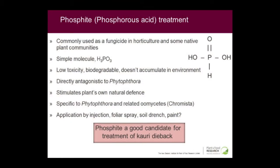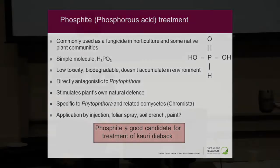Phosphite is a very simple molecule, H3PO3. It's been used in horticultural systems for a number of decades now, specifically to treat kauri dieback, and it's also being used in native plant communities as well, particularly in Australia, where they've done some excellent work. It's a fairly safe chemical to use — it's got low toxicity and it doesn't accumulate in the environment.